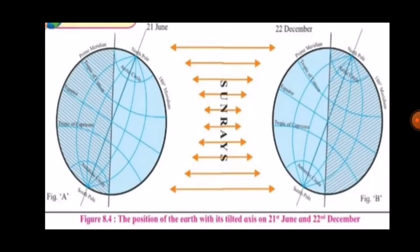Sun rays are never perpendicular on any of the parallels between the Tropic of Cancer and the North Pole, or between the Tropic of Capricorn and the South Pole. 21st June is the longest day and marks the shortest night in the northern hemisphere. Similarly, 22nd December marks the longest day and the shortest night in the southern hemisphere, and is the shortest day in the northern hemisphere.